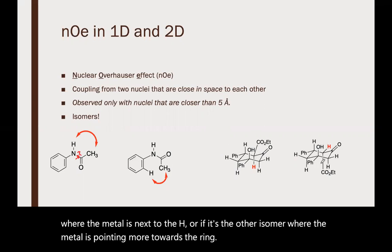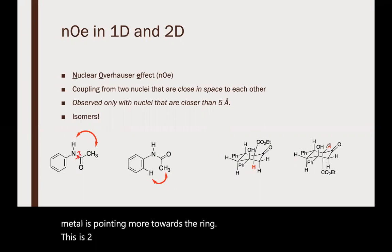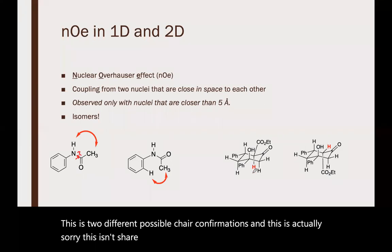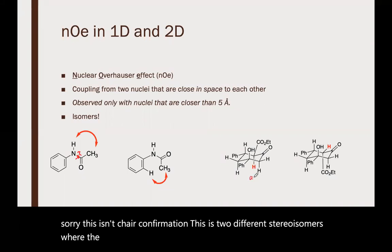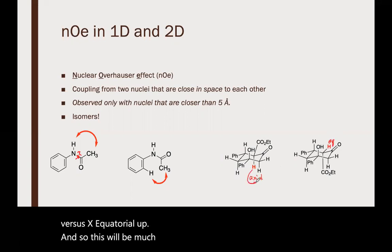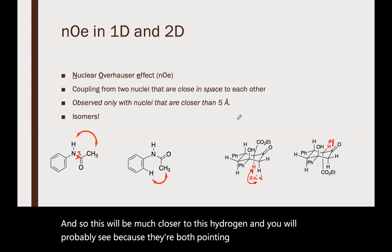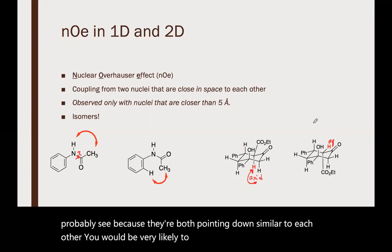This is two different stereoisomers, sorry not chair conformations. In this stereoisomer the hydrogen is axial down versus equatorial up. This will be much closer to this hydrogen, and because they're both pointing down similar to each other, you'd be very likely to see a correlation there.